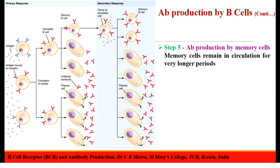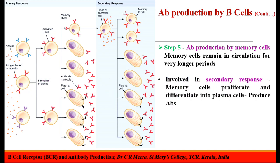The next step is the antibody production by memory cells. The memory cells that are differentiated from the activated B-lymphocytes will remain in the circulation for very longer periods and they are involved in the secondary response. That means when the same antigen enters the body for a second time, memory cells will immediately proliferate and differentiate into plasma cells which will then clear the antigens. That's why the secondary response is faster than the primary response.